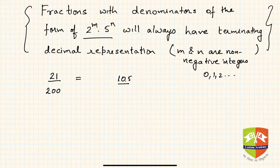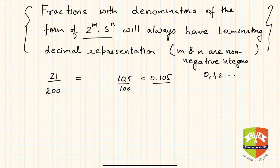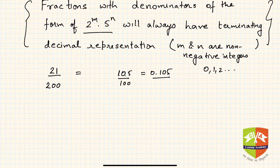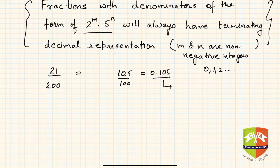So 21 divided by 200 equals 0.105. As you can see, this is a terminating decimal representation.